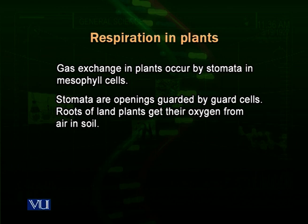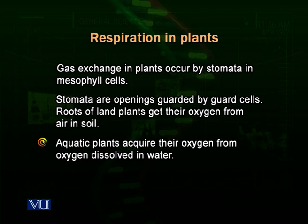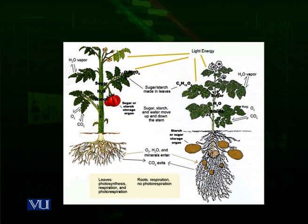Plant roots also have to exchange gases. Plant roots are present inside the soil mostly, and the roots in the soil absorb oxygen from soil. Soil particles have certain pores in them, and in these pores oxygen is present. Just like aquatic plants absorb oxygen from their surrounding water. Looking at the diagram, it shows exchange of water, oxygen, and carbon dioxide from the leaves. Roots, including tubers like potatoes, also absorb oxygen, water, minerals, and other materials, and exchange gases like carbon dioxide with the soil.